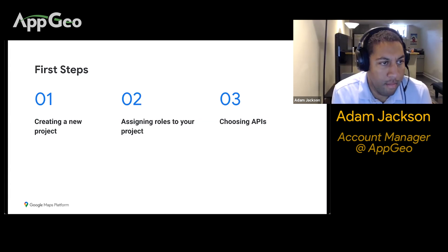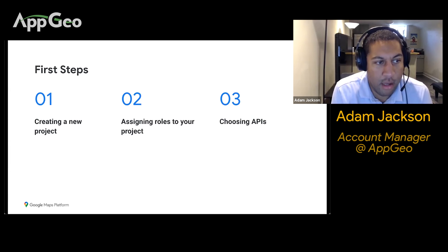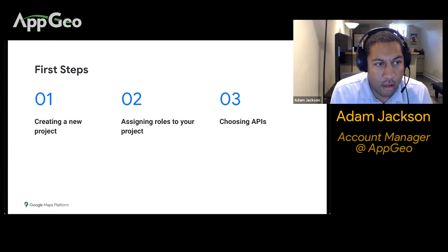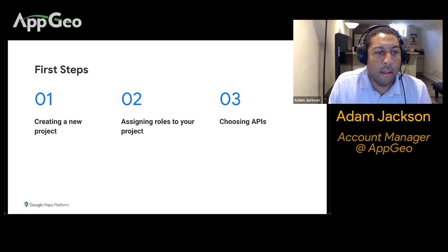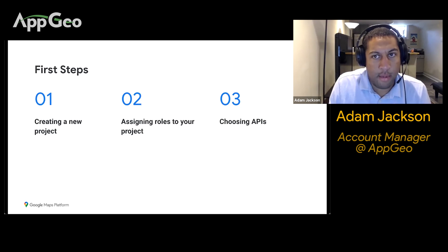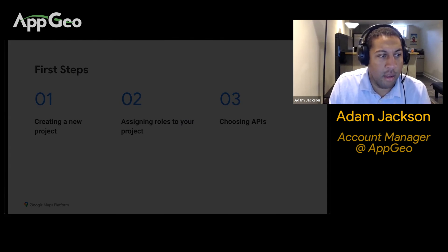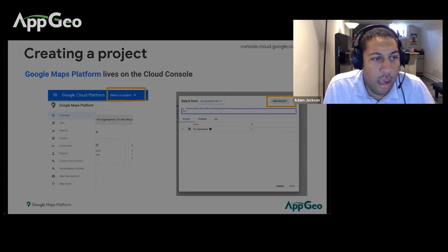We're going to be covering the three easy steps to getting started with a project on Google's Maps Platform — creating the project, assigning roles, and then choosing APIs and setting up keys.